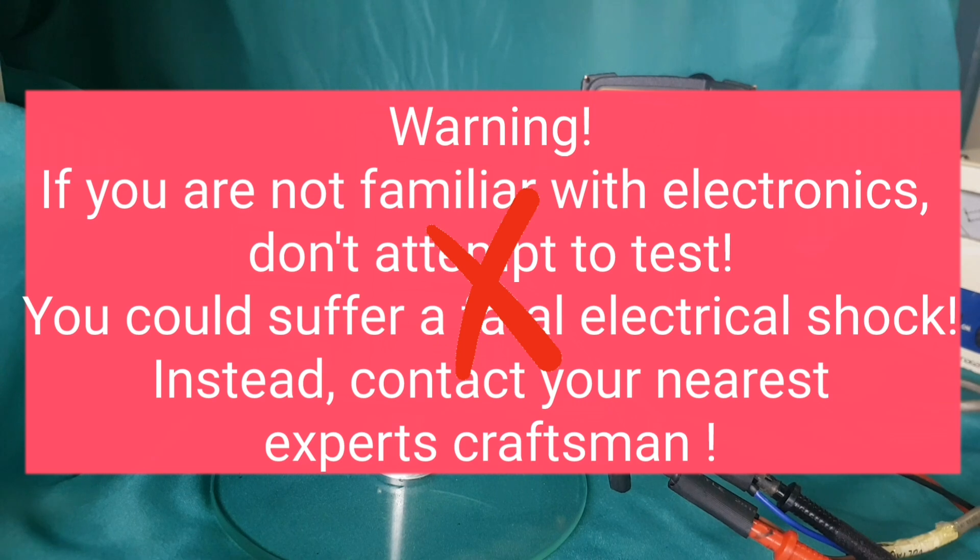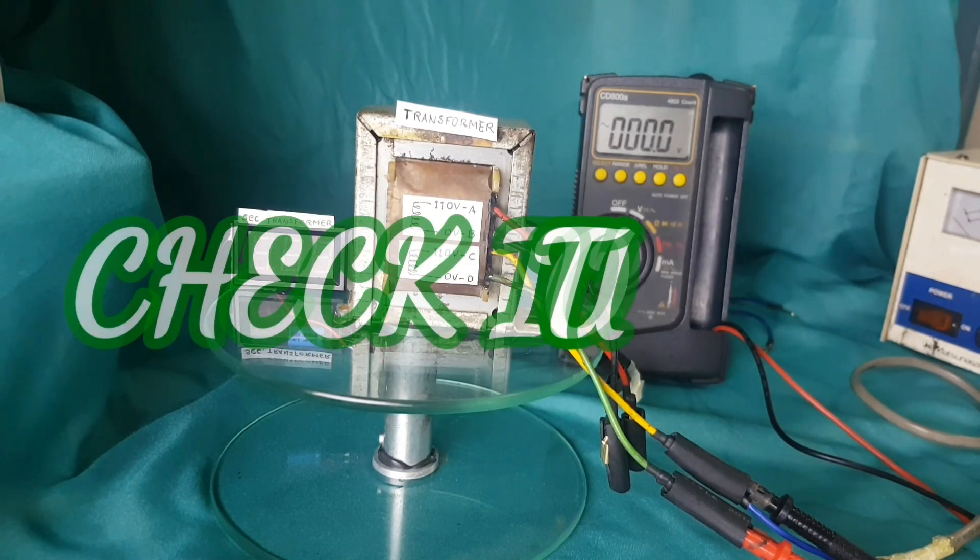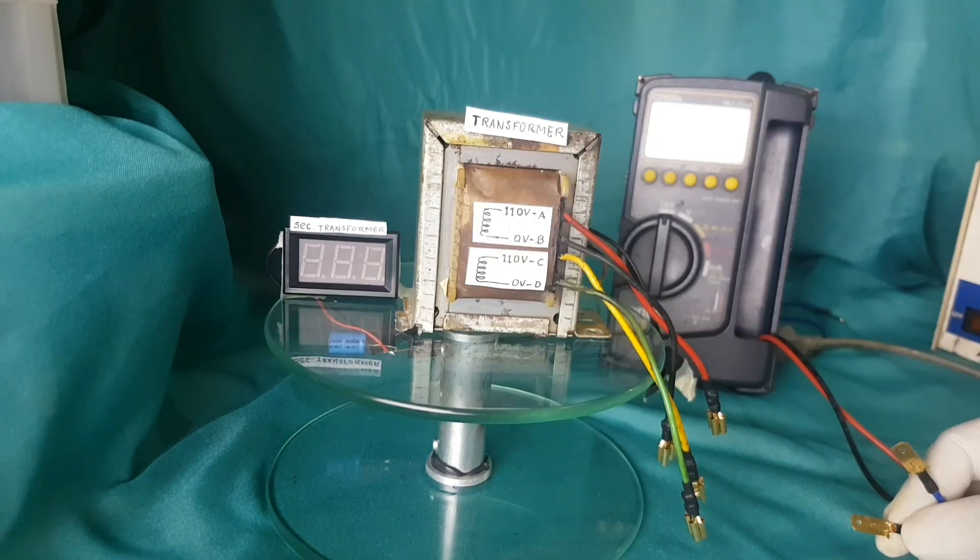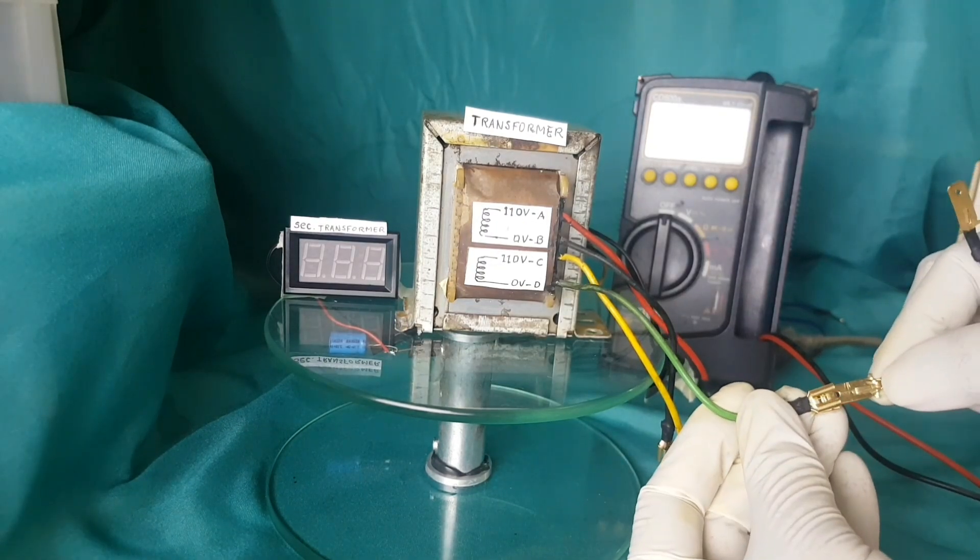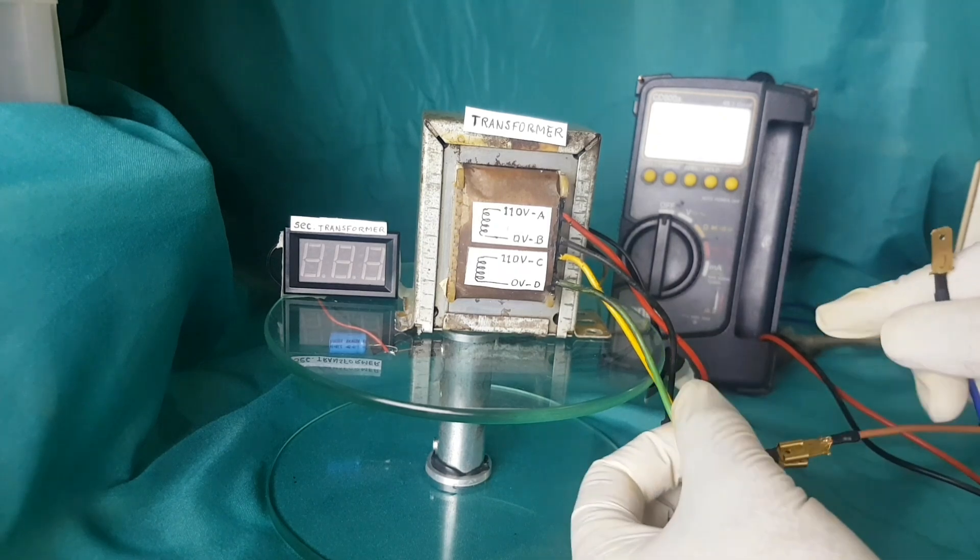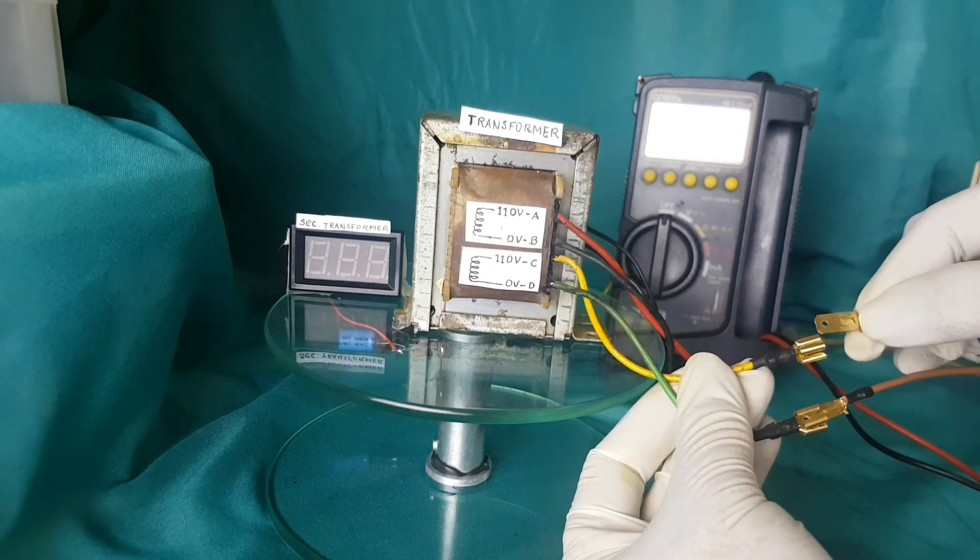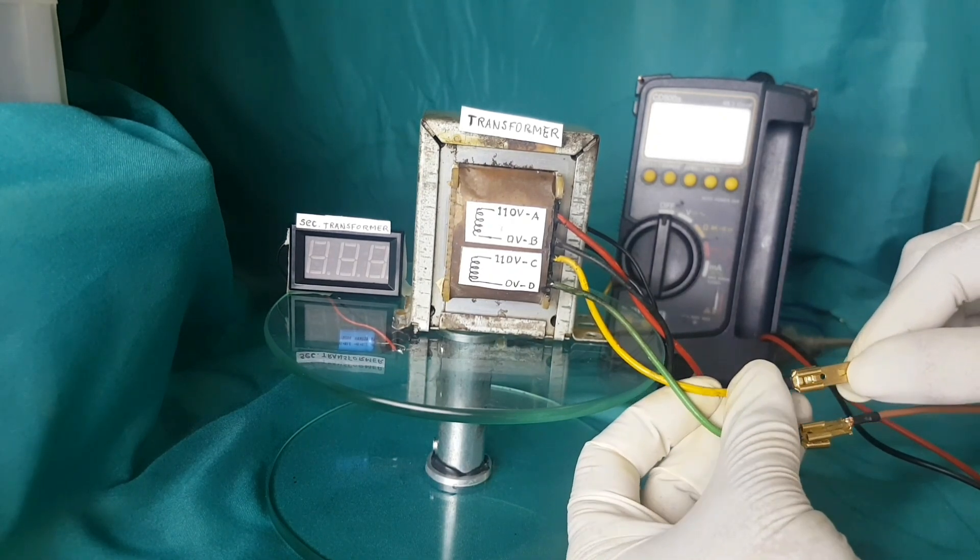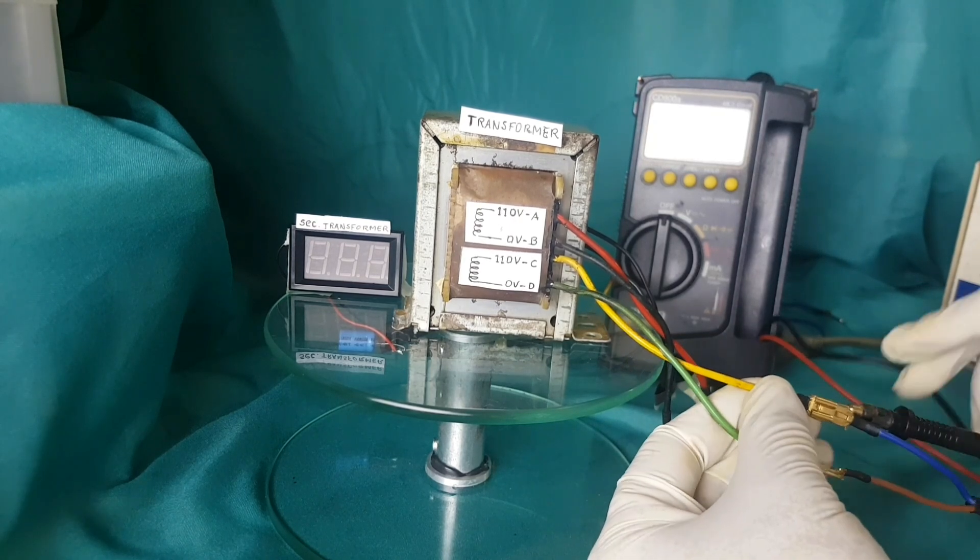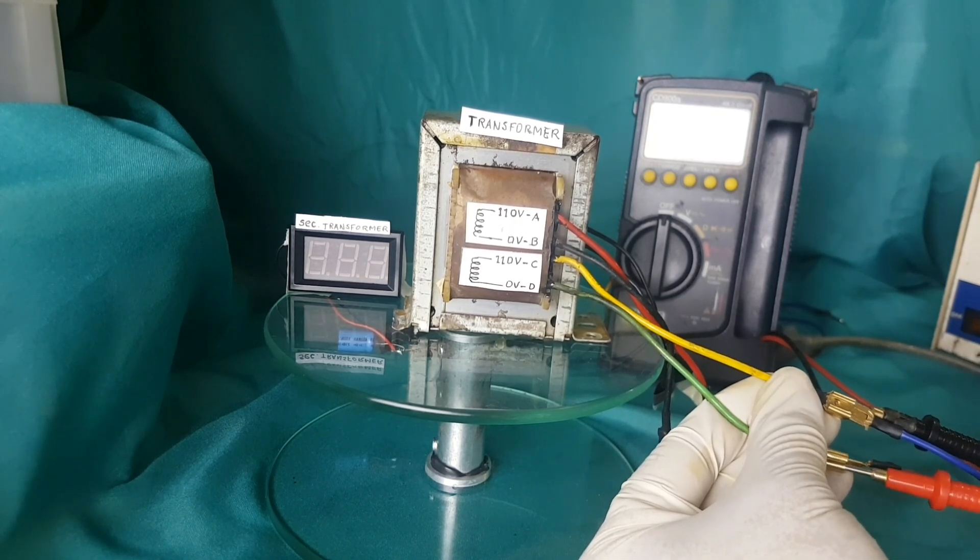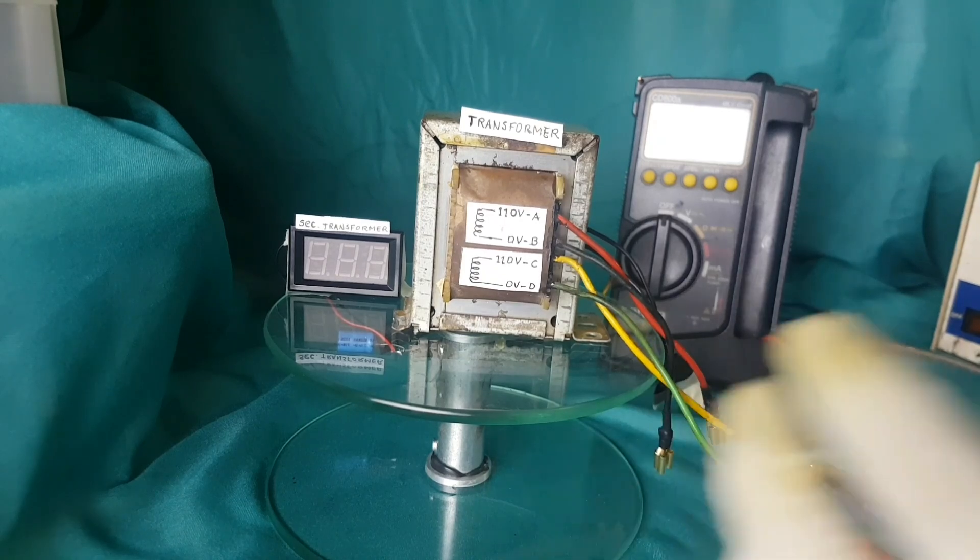Instead, contact your nearest expert craftsman. Check it out: Insert the source voltage 110V AC into the connector DNC or into the green and yellow wires. Put a digital AC voltmeter in parallel with the wires.